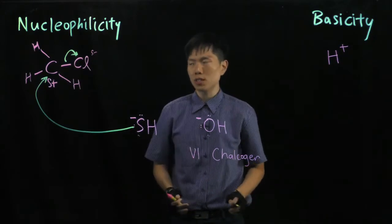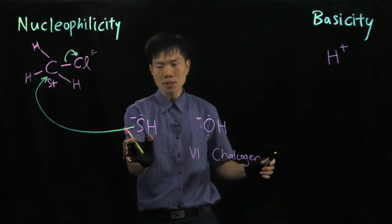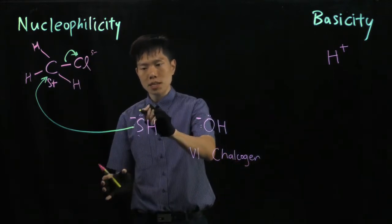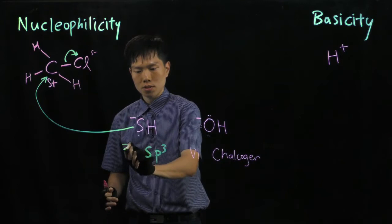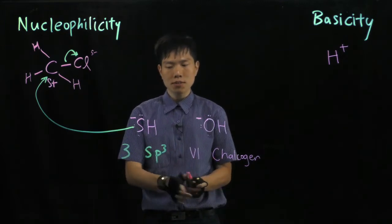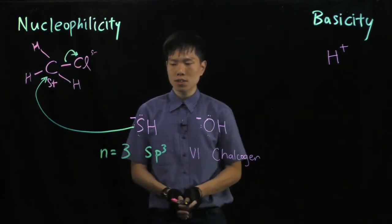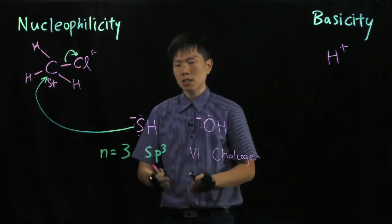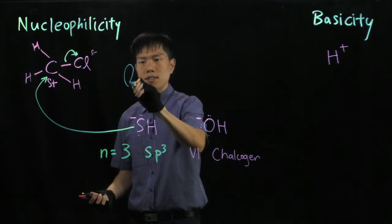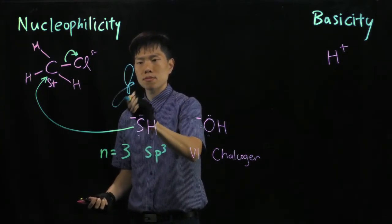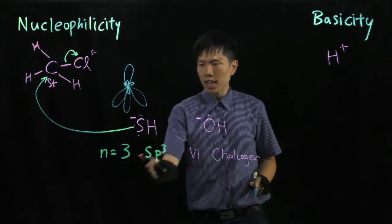The same goes with oxygen. But the difference is sulphur is much larger, so the orbital — if I'm to depict it — this is an sp³ orbital coming from period 3, a 3sp³ orbital. This doesn't mean it's 3 times larger; we are talking about n equals to 3. The quantum number is 3, which means this orbital is much larger.